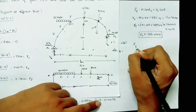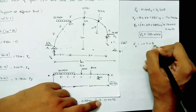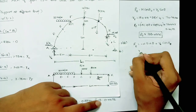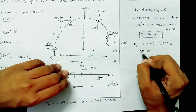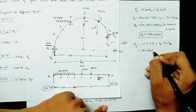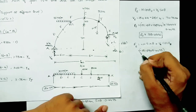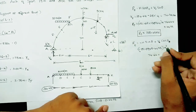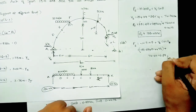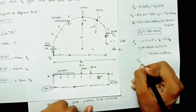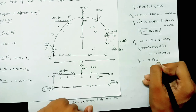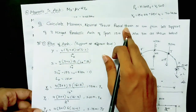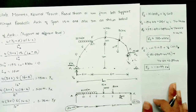For radial shear at E: F_E = −H sin θ + V_E cos θ = −151.09 × 0.4472 + 74.44 × 0.8944 = −67.57 + 66.58 ≈ −0.99 kN. The radial shear at point E is approximately −0.99 kN.